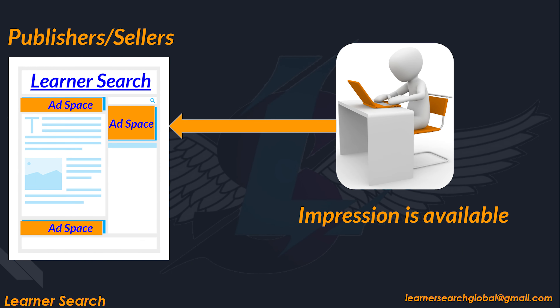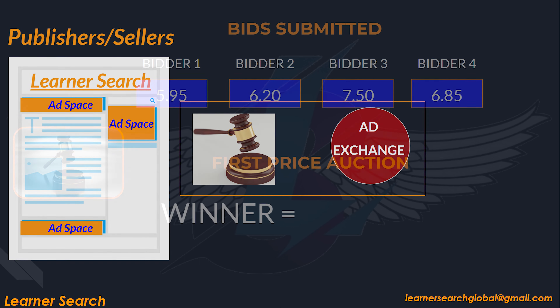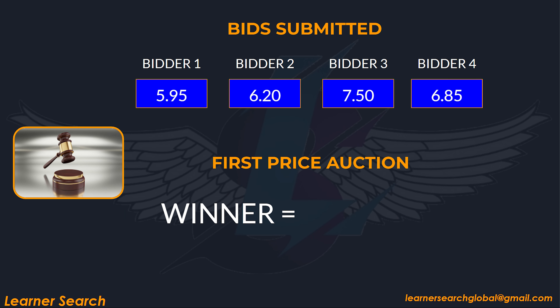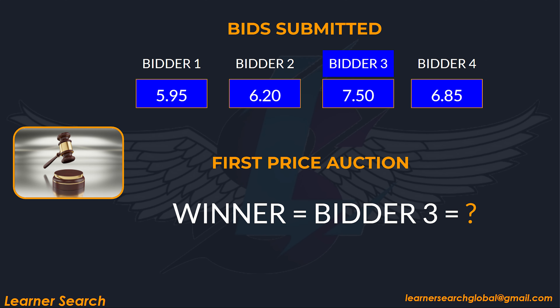Let's assume a user lands on a webpage, triggering an impression for an auction in the ad exchange marketplace. But who wins this bidding war? Let's consider 4 bidders: Bidder 1 offers $5.95, Bidder 2 offers $6.20, Bidder 3 goes big with $7.50, and Bidder 4 puts forward $6.85. Among them, Bidder 3 wins the auction with the highest bid of $7.50.